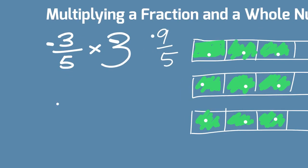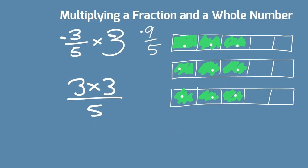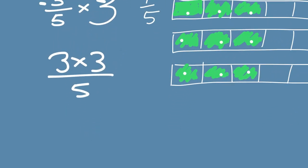Again, we've got the numerator times that whole number, all over the denominator, 3 times 3, all over 5. And when we do that math, guess what? We get what we counted. 3 times 3 is 9, all over 5, improper. So, we end up with 1 and 4 fifths.